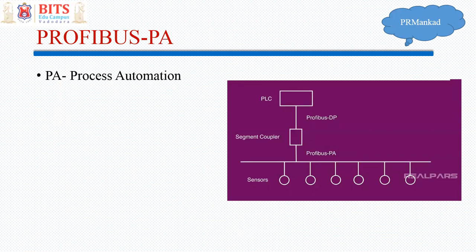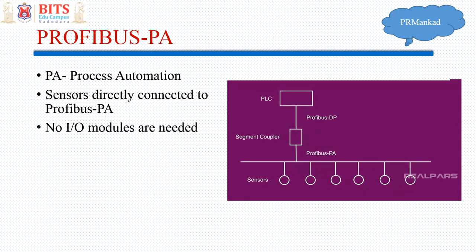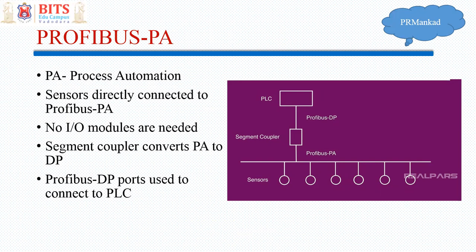Profibus PA stands for Process Automation. Here the I/O module is removed — sensors are directly connected to Profibus PA with no I/O module required. If your PLC is older, you can use a segment coupler which converts Profibus PA to Profibus DP, allowing compatibility with older PLCs. Profibus PA is the latest variant of Profibus.